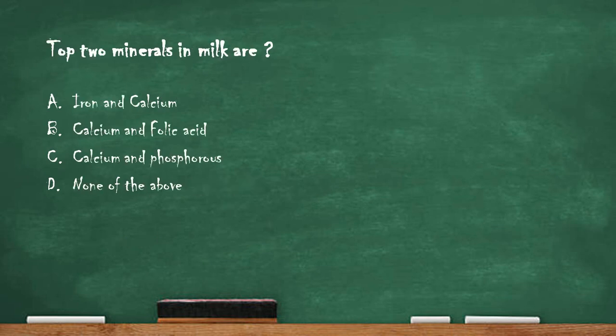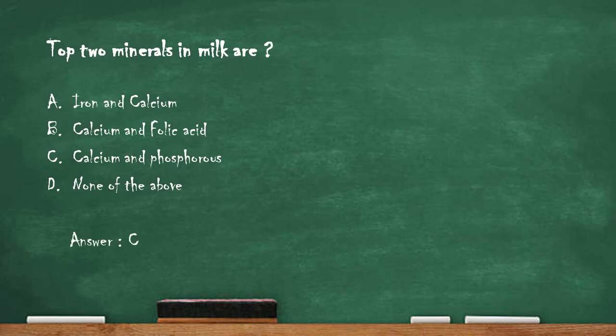Next question: top two minerals in milk are — option A: iron and calcium. Option B: calcium and folic acid. Option C: calcium and phosphorus. Option D: none of the above. The right answer is option C — calcium and phosphorus. Calcium and phosphorus are the top two minerals present in milk.